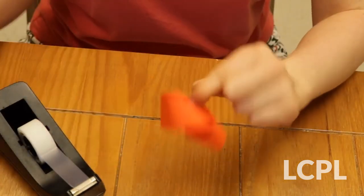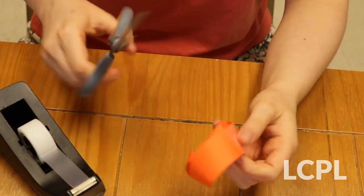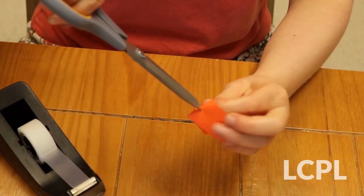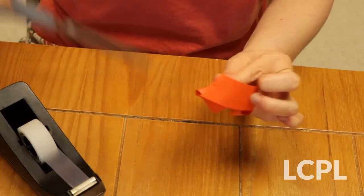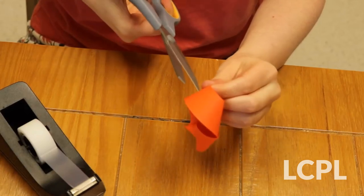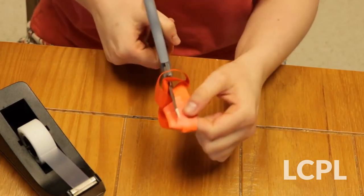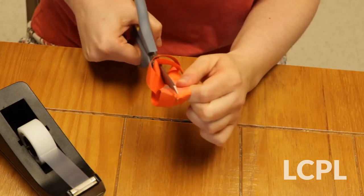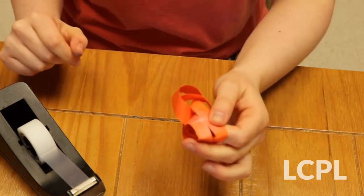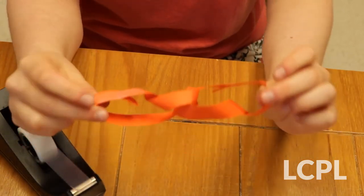All right, so now that you have your shape here, you're going to take the scissors and you're going to make a little cut right in the middle of your strip, and then you're going to cut this entire strip in half. All right, so once you get to the end, you're going to have your paper here, and then you pull it apart and look at that!